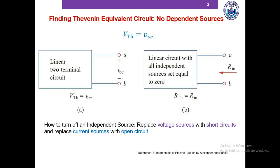So let's say we're trying to determine the Thevenin equivalent to the left of terminal A and B. To compute Vth we compute the open circuit voltage of terminal A and B. We call this an open circuit voltage because we're disconnecting anything connected to the right of terminal A and B, so that the open circuit voltage computed is basically the Thevenin voltage.